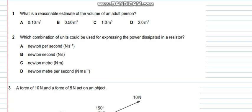Question number 1 says what is the reasonable estimate of the volume of an adult person. For this purpose we will use the formula density equals mass over volume, so volume becomes mass over density. The mass of an average person is 70 kg and the density of an average person is that of water which is 1000. This makes up 0.07 meter cube which rounds up to part A 0.1 meter cube.